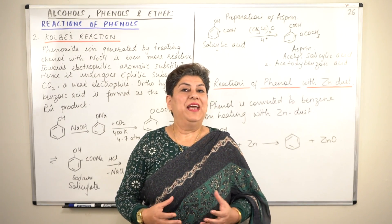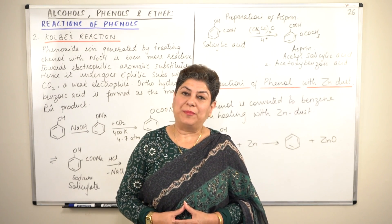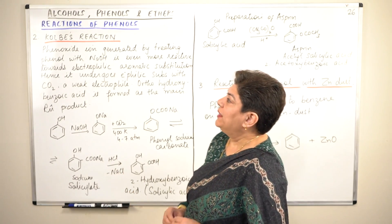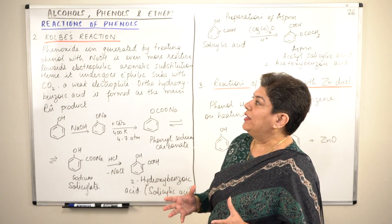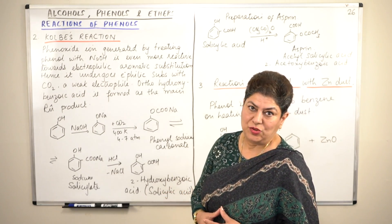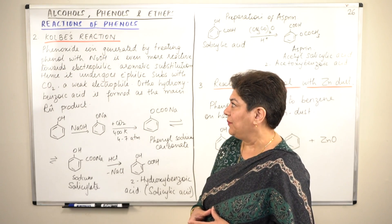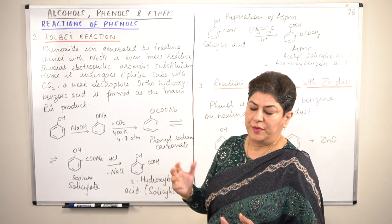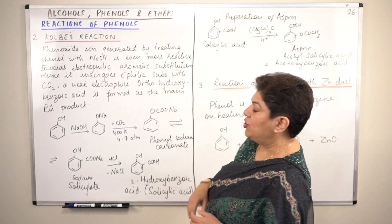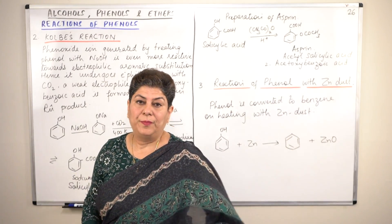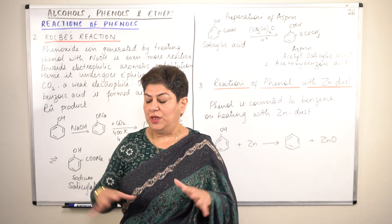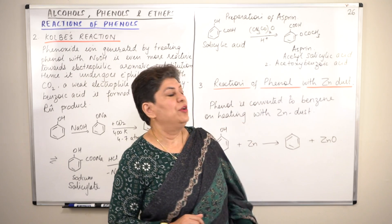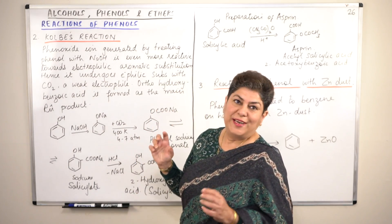Hello, I am Seema and welcome to part 26 of the chapter Alcohols, Phenols and Ethers. We have been doing the reactions of phenols, under which we did the first category: Electrophilic Substitution reactions. There are five types of reactions we will be doing: Kolbe's reaction, Riemann-Thiemann's reaction, reaction of phenol with zinc, and oxidation. In this video I will be doing only Kolbe's reaction and the reaction of phenol with zinc dust.